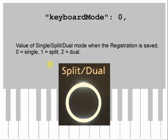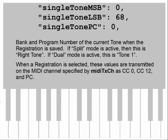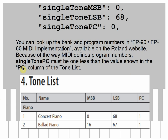Keyboard mode can be split, dual, or single — zero is single, one is split, two is dual. Three settings specify the current tone when the registration is saved: if split is active it's the right tone; if dual is active it's tone one; otherwise it's the single tone. These three settings represent MIDI bank select MSB (CC0), bank select LSB (CC32), and program change. You can look up bank and program numbers in the FP90/FP60 MIDI implementation document on the Roland website. For concert piano, MSB is zero, LSB is 68, and because of how MIDI defines program numbers, program one has to be entered as zero.